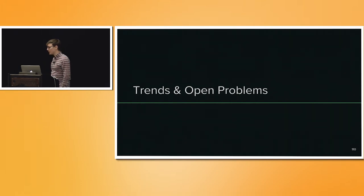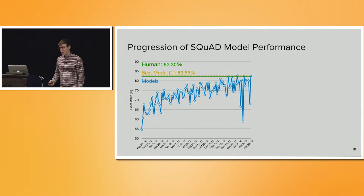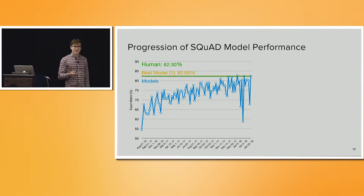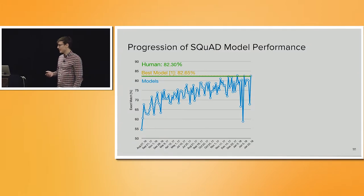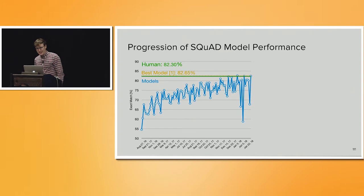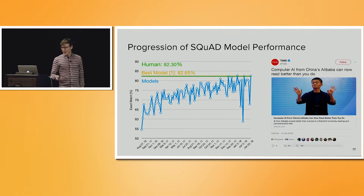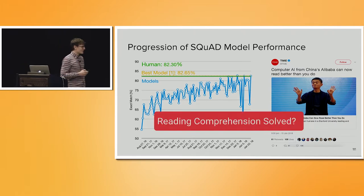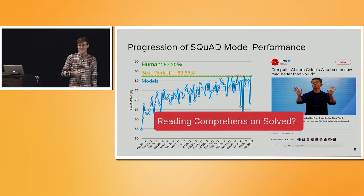We've seen quite impressive improvements in model performance on SQUAD since its release two years ago. At the beginning of this year, there was a point when the first model got a performance number higher than a humanly recorded performance number, and there was a lot of excitement in the media that AI can now read better than humans. Which leaves us with the question: is reading comprehension now solved? Are we done? Can we go home?